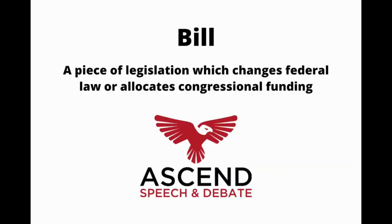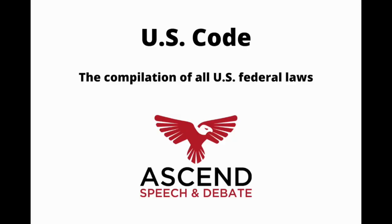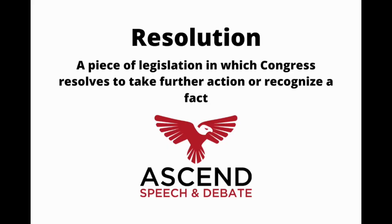The very first step of any Congress tournament is reading the legislation so you know what you're debating. There are three kinds of legislation. The first is called a bill, which is a piece of legislation that changes or creates US law or allocates congressional financial resources. Bills are the only kinds of legislation that can provide funding or change US code, which is basically the list of all federal laws. The second kind is called a resolution, in which Congress resolves to take a specific action or recognize a specific fact — usually Congress's way of saying 'we will do something in the future.' For example, the only way for Congress to ratify a treaty or declare war is through a resolution.